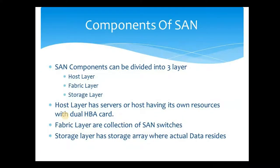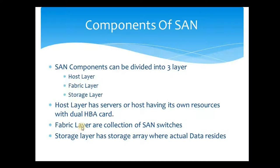The components of SAN storage can be divided into three layers. The first layer is the host layer, the second is the fabric layer, and the third is the storage layer. The host layer has servers or hosts with their own resources and a dual HBA card. The fabric layer is a collection of SAN switches, which may be Brocade or Cisco. The storage layer has the storage array where the data actually resides.